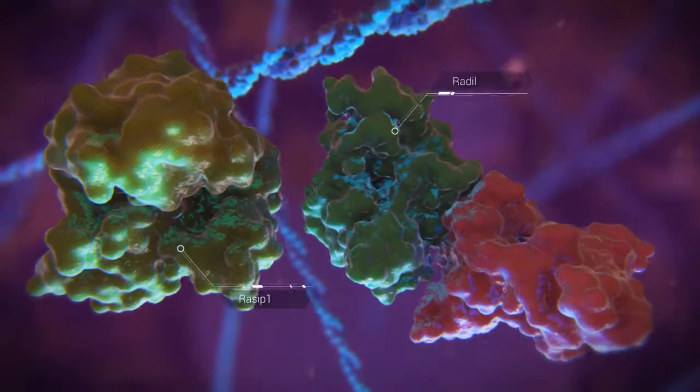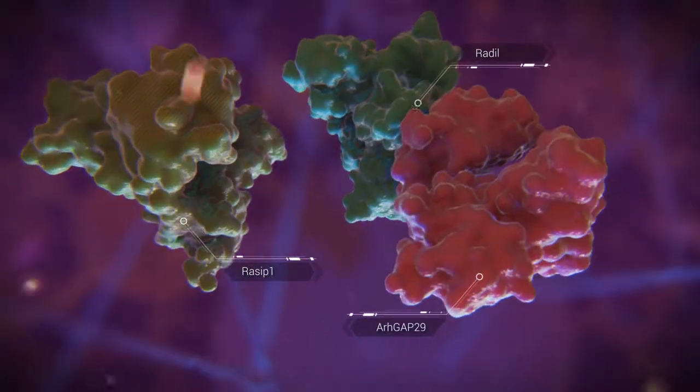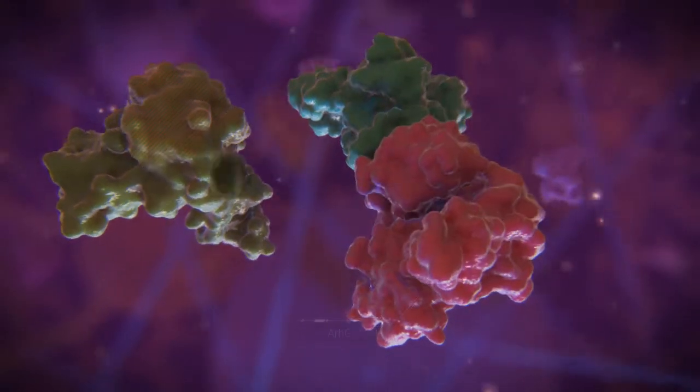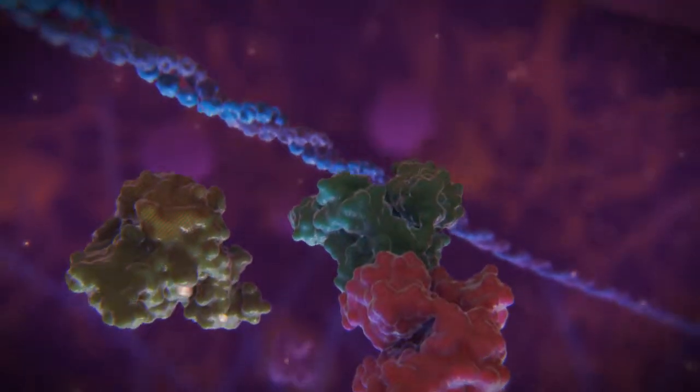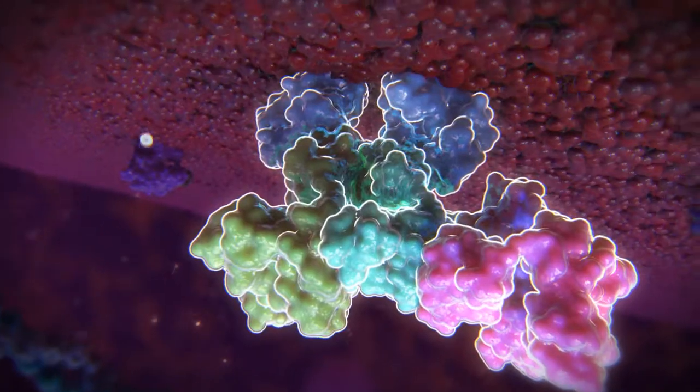Two effector proteins of RAP1, RAC1 and RADIL, are in the cytosol. RADIL is bound to ARCHGAP29, a RHO-GTPase activating protein. These proteins bind to activated RAP1 to form a multimeric protein complex.